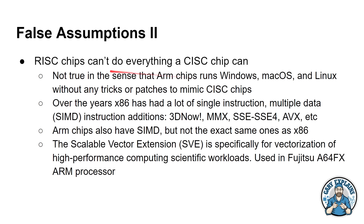Another false assumption: RISC chips can't do everything that CISC chips can. That's not true. An ARM chip can run Windows, macOS, Linux, and all the apps to go with them if they are compiled for that architecture — just like an Intel chip can. Over the years x86 had lots of extra instructions added, particularly SIMD — single instruction multiple data — including 3DNow!, MMX, SSE through to SSE4, and AVX. ARM chips also have SIMD instructions, but not the same ones — there's no MMX in ARM chips. Can they achieve the same thing? Absolutely. ARMv8 has the Scalable Vector Extension specifically for vectorization for high-performance computing, and that's what's used in the Fujitsu A64FX processor in that supercomputer.